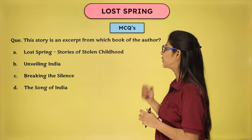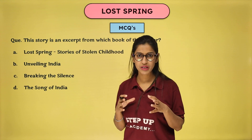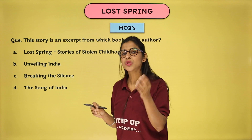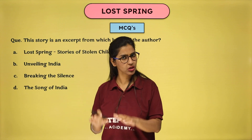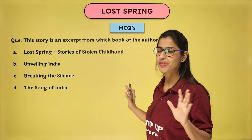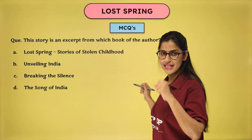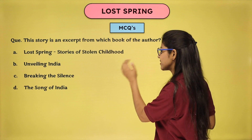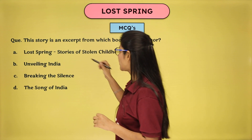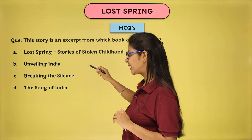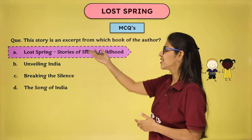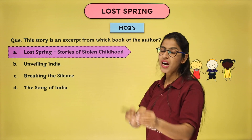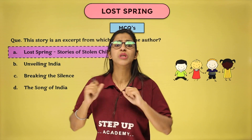Next question: this story is an excerpt from which book of the author? When we studied the chapter at the beginning, if you missed it, there is a recorded one-shot video of Lost Spring linked in the description box. You can click and watch the revision. So this chapter is basically an excerpt, extracted from a larger work. Options: Lost Spring, Stories of Stolen Childhood; Unveiling India; Breaking the Silence; The Song of India. The answer is clear from the title itself — 'Lost Spring: Stories of Stolen Childhood.'